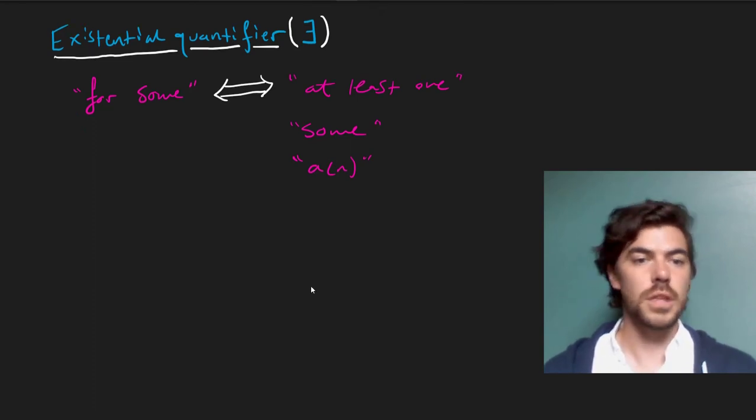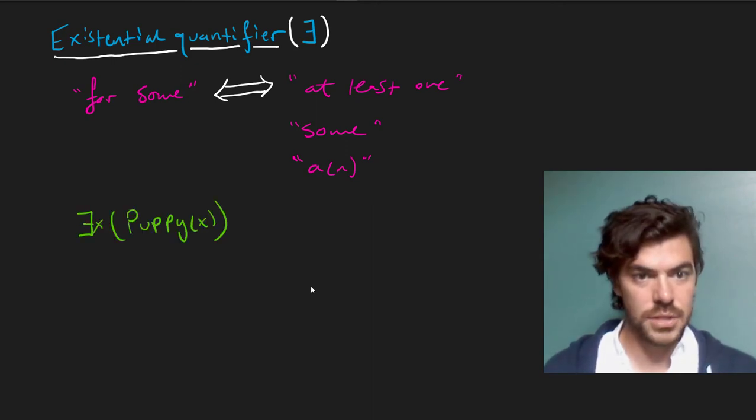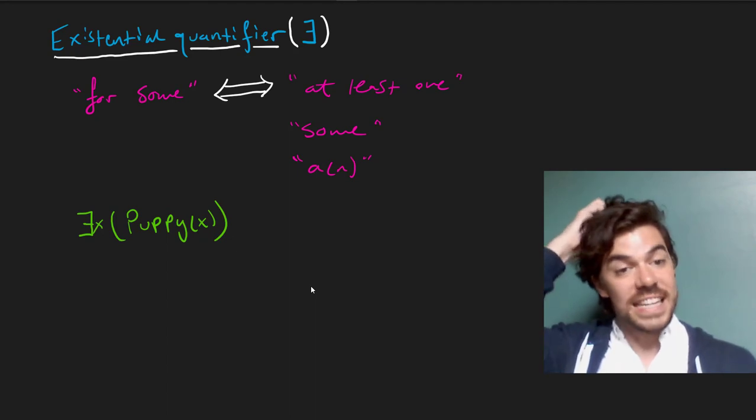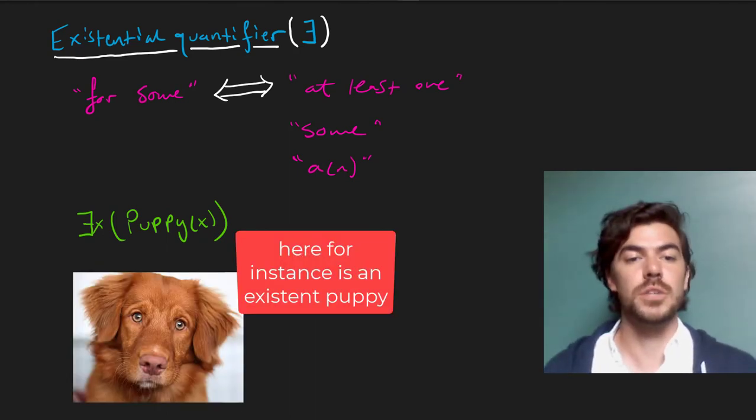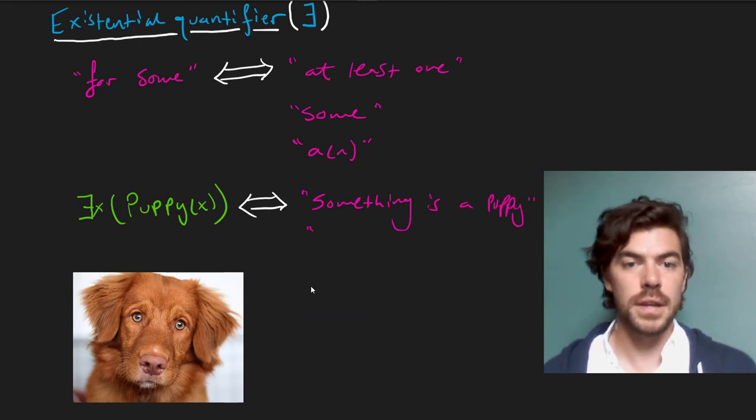Here are some examples. Suppose we wanted to say something is a puppy. We'd express this as follows: For some x, x is a puppy. And this is true just in case there's at least one puppy. We can express this in English as something is a puppy, or even there is a puppy.